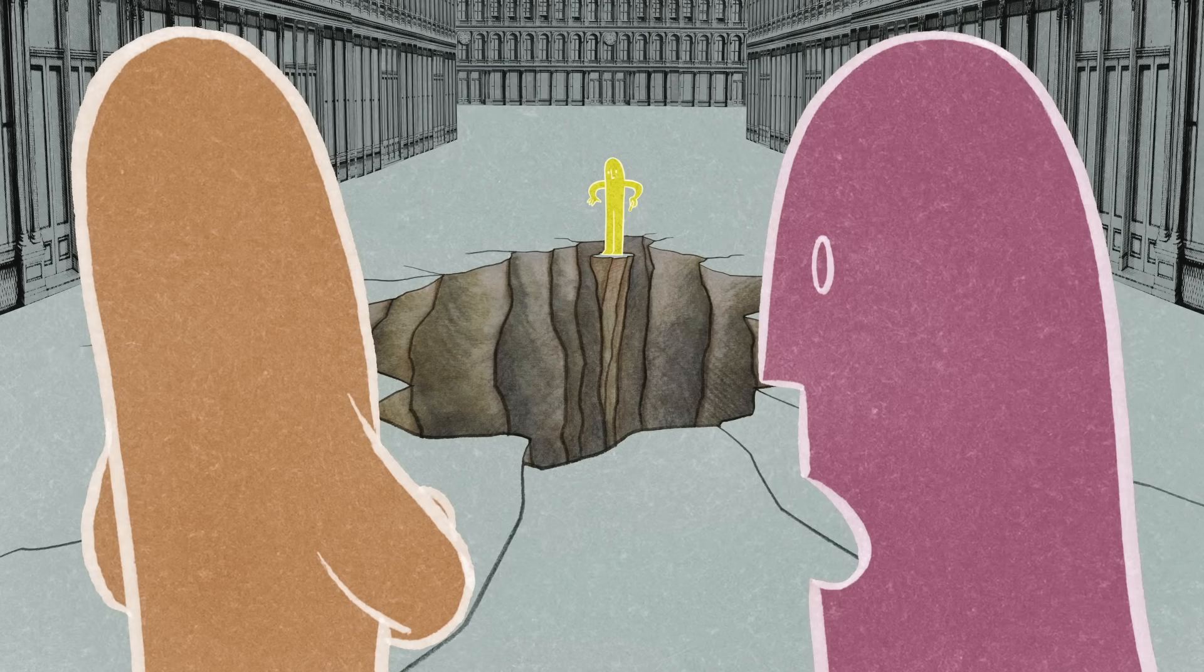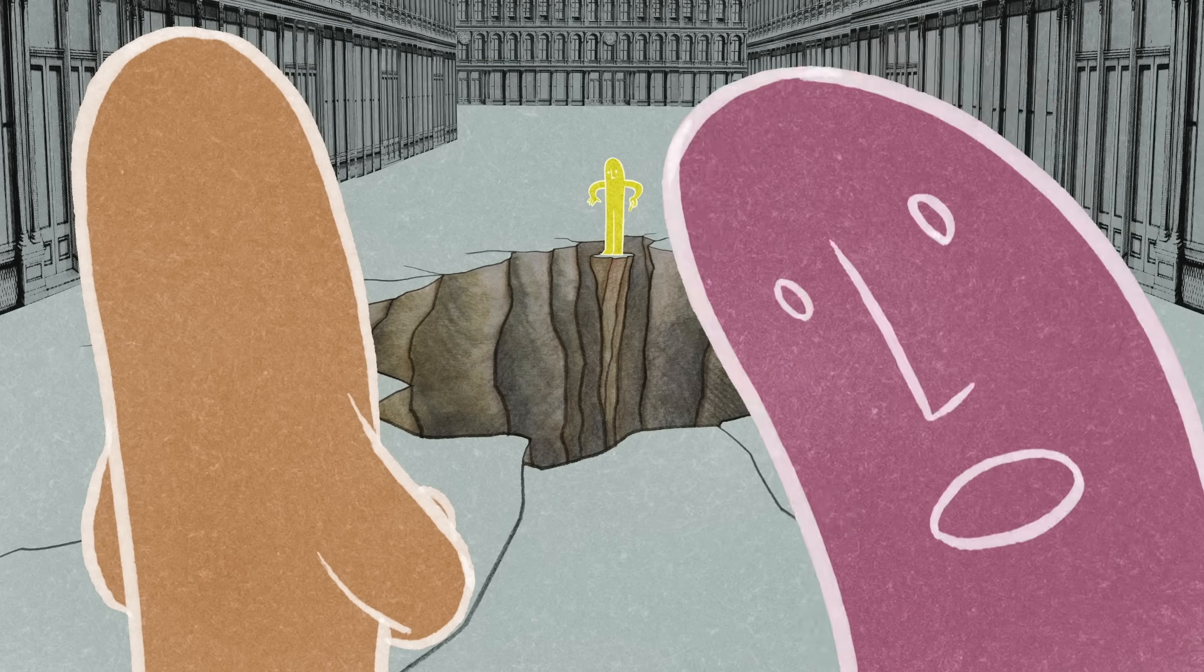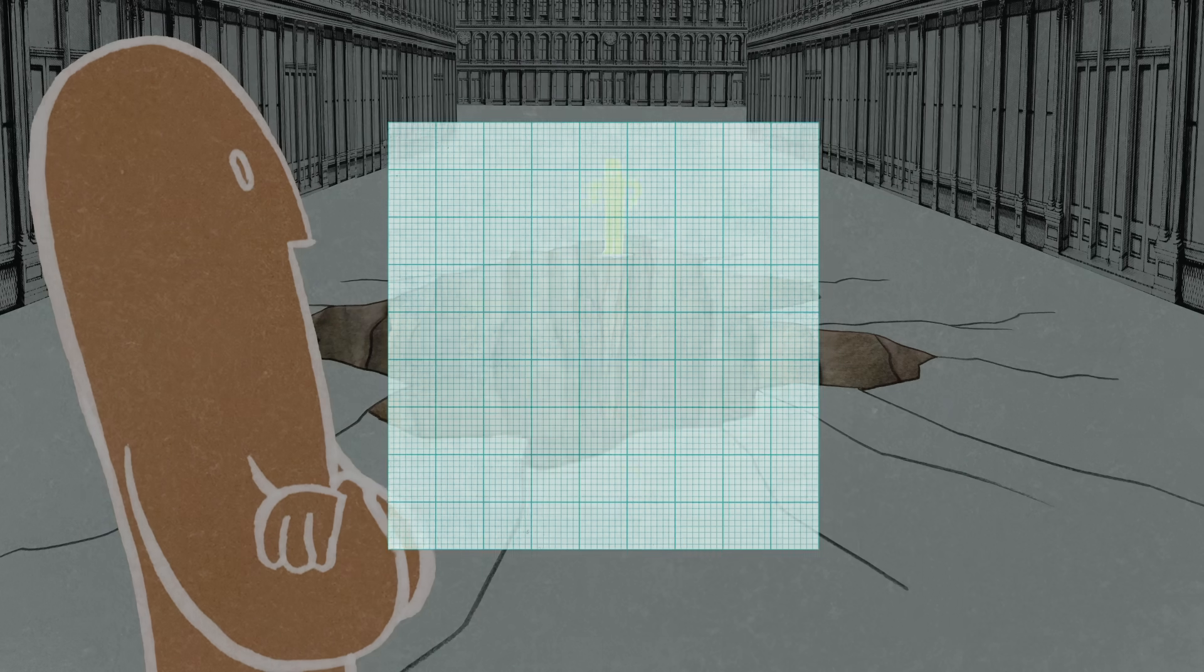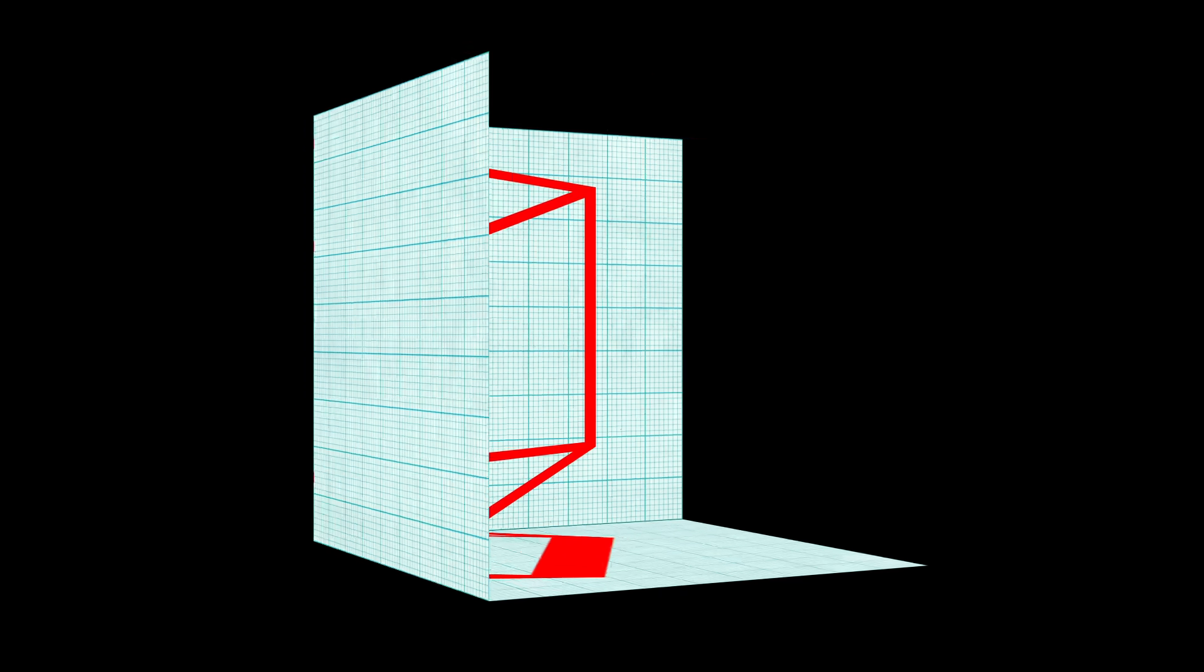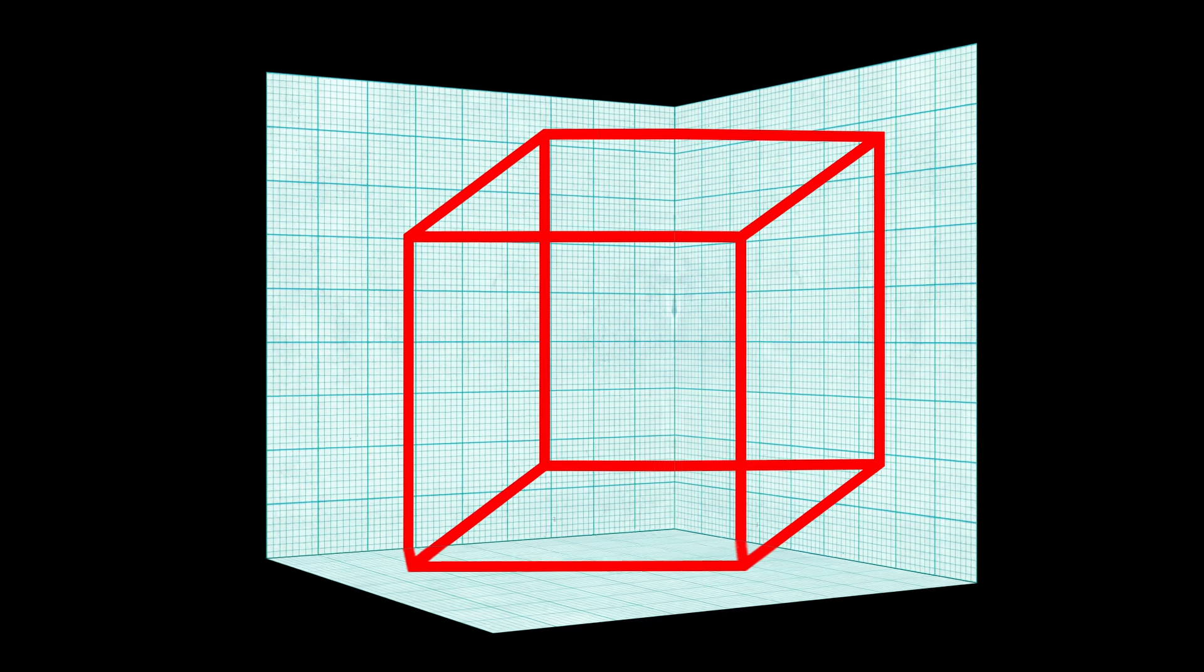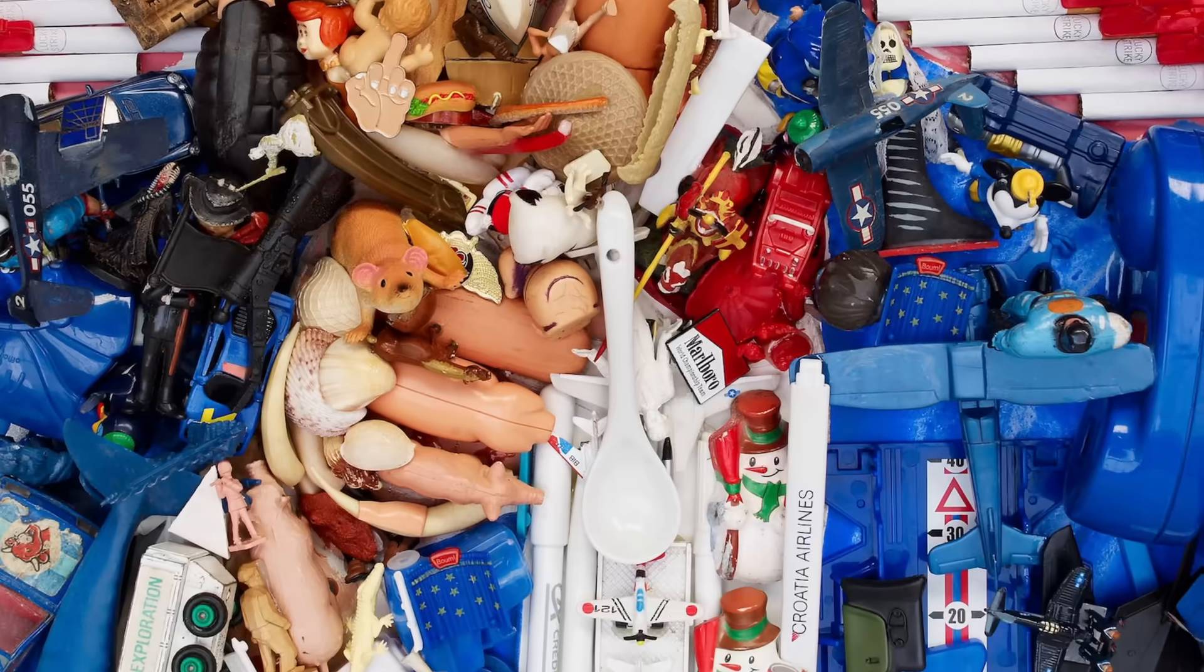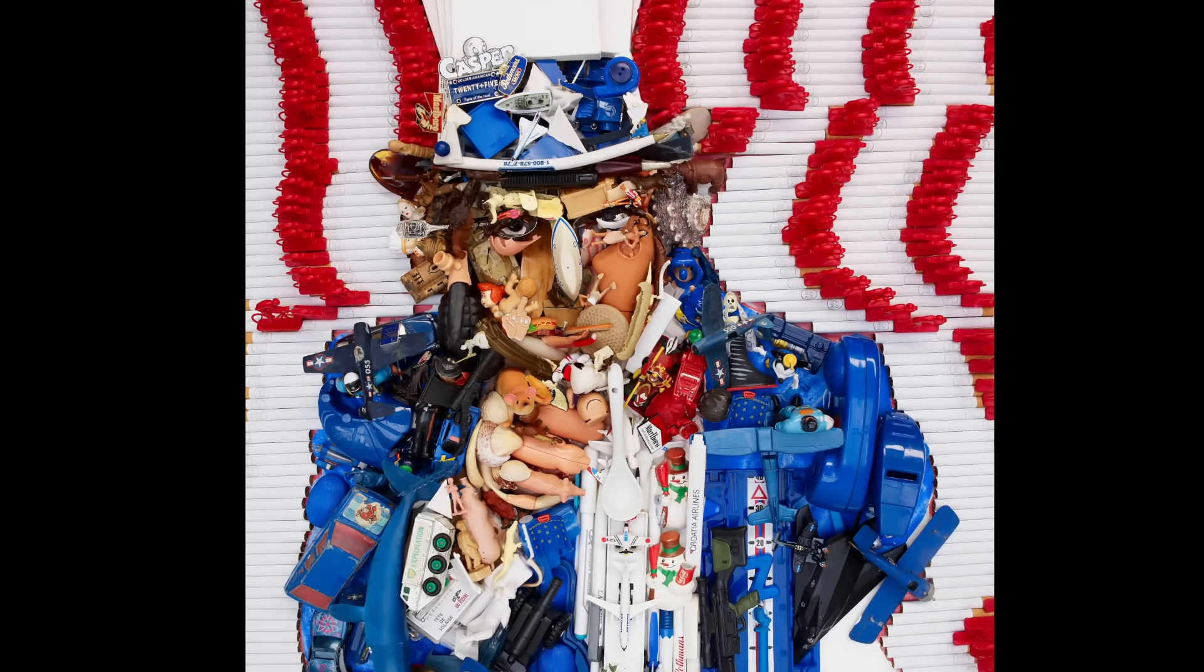So viewers' brains will again be tricked into believing that the drawing on the ground is three-dimensional. And you don't have to project onto a flat surface to create this illusion. You can project onto multiple surfaces, or assemble a jumble of objects that, from the right point of view, appears to be something else entirely.